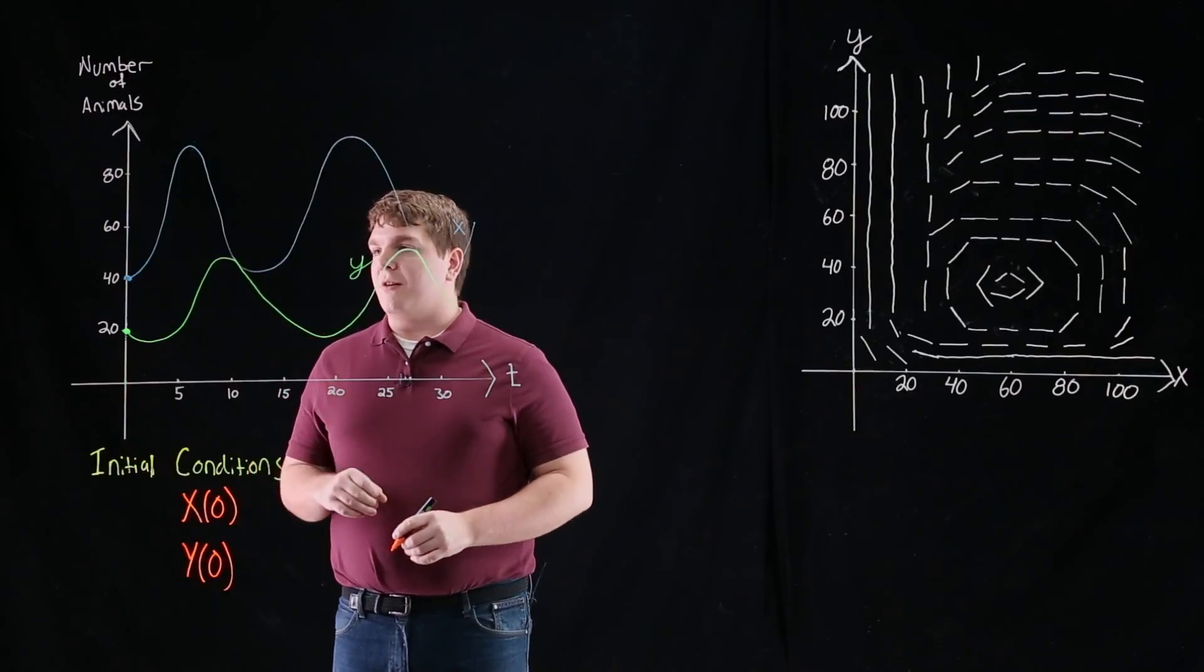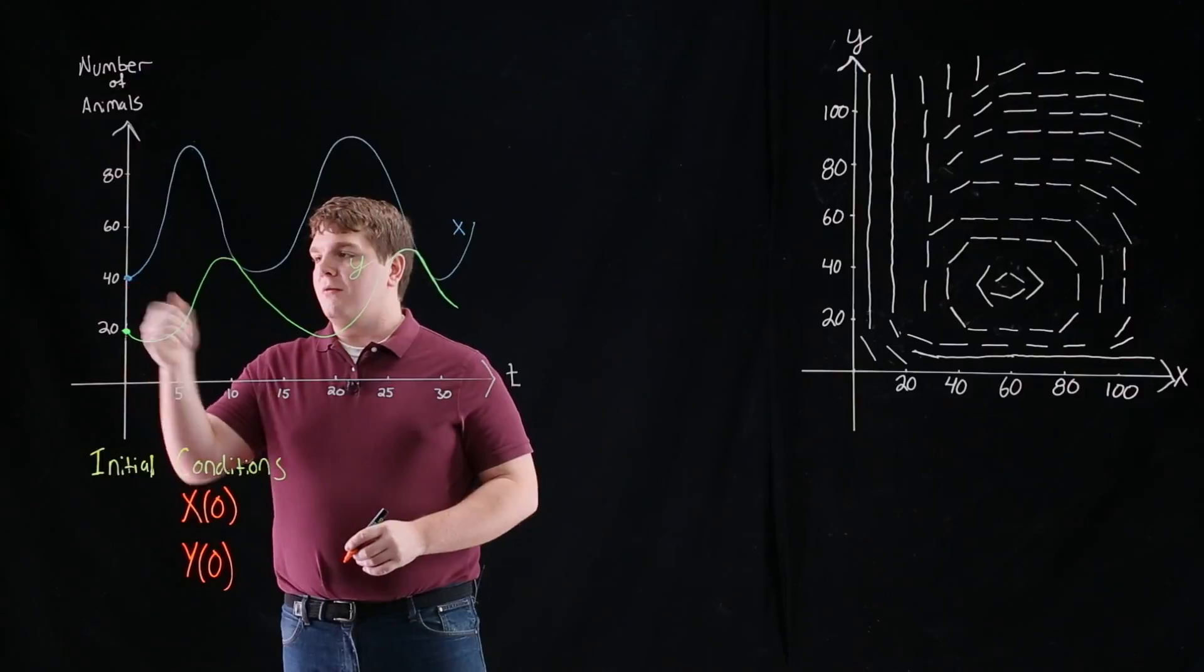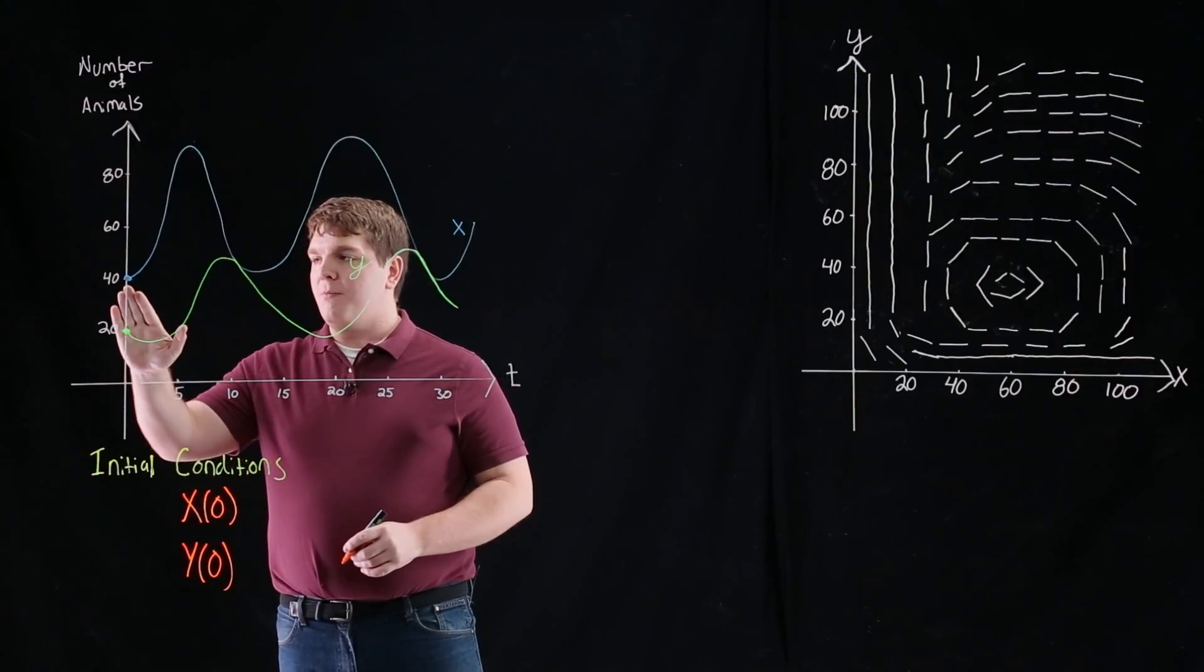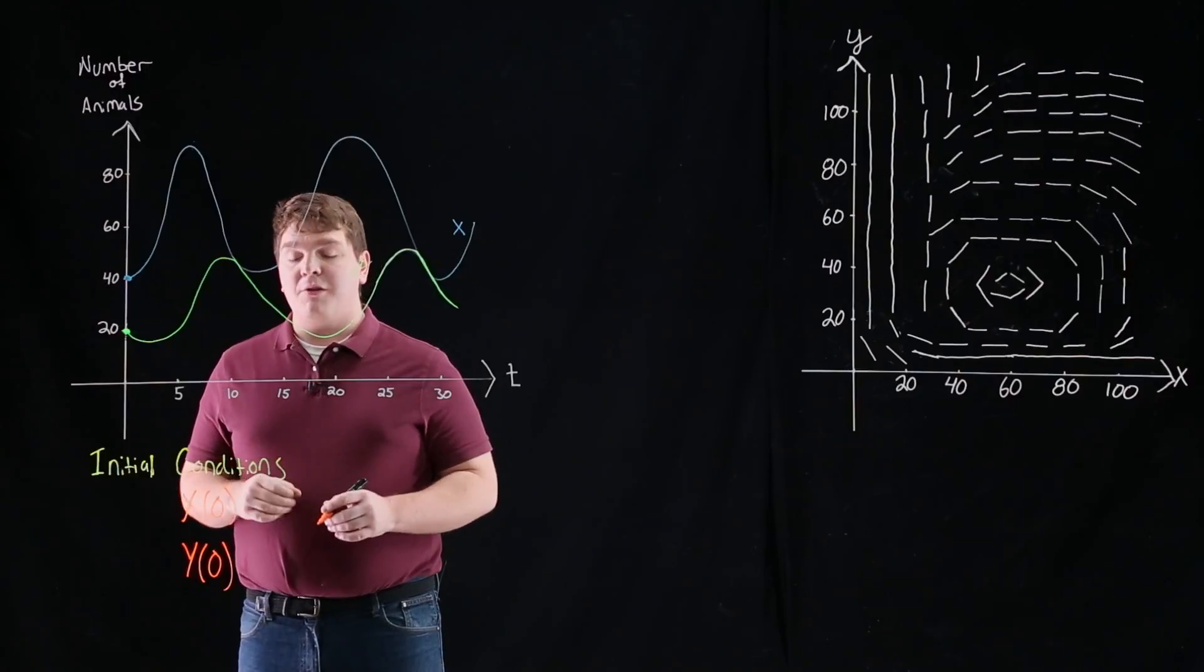So to find x, we just have to look at the graph of x and then trace this back to where time equals 0, and we see that when time equals 0, x takes on a value of 40.